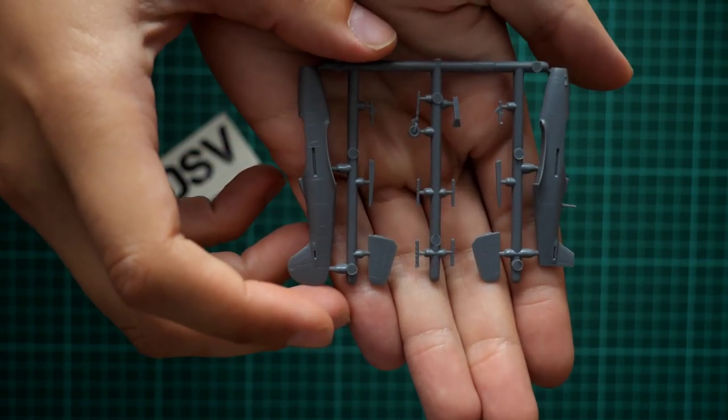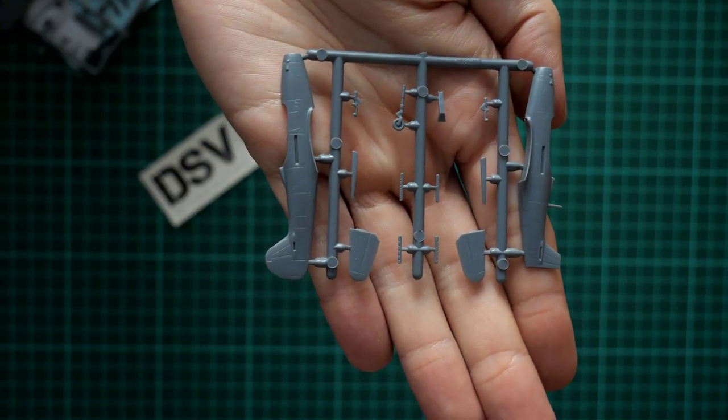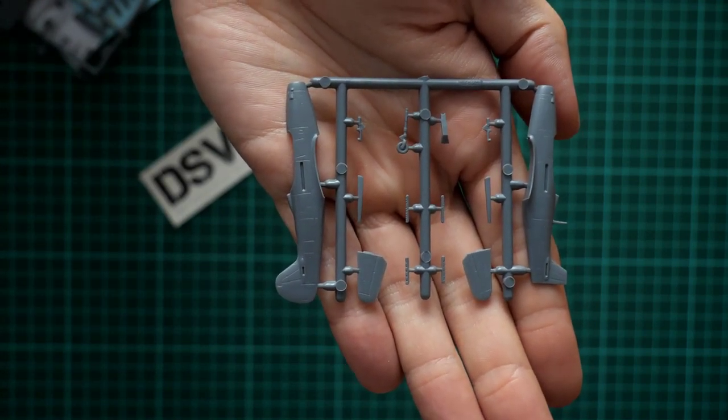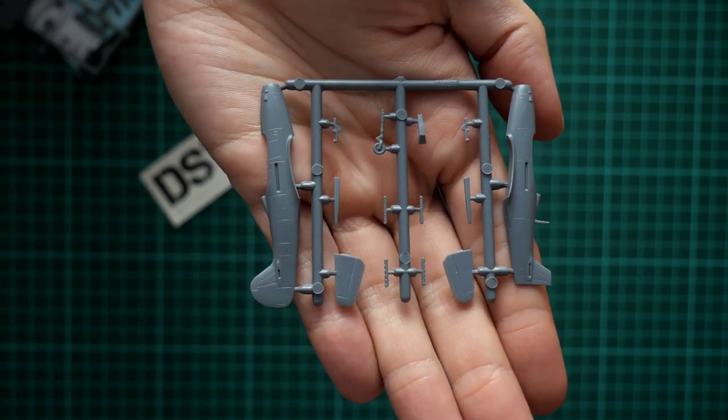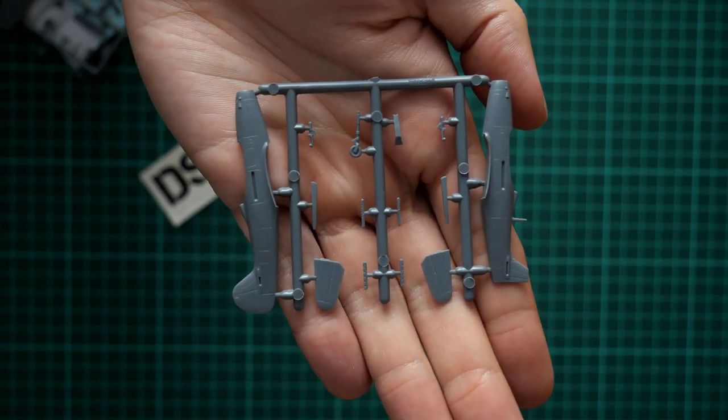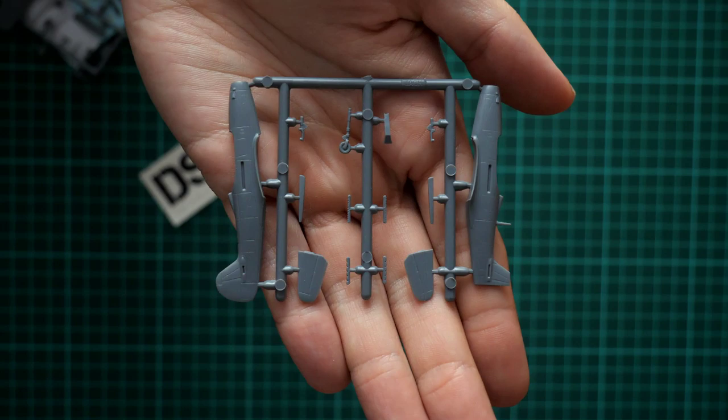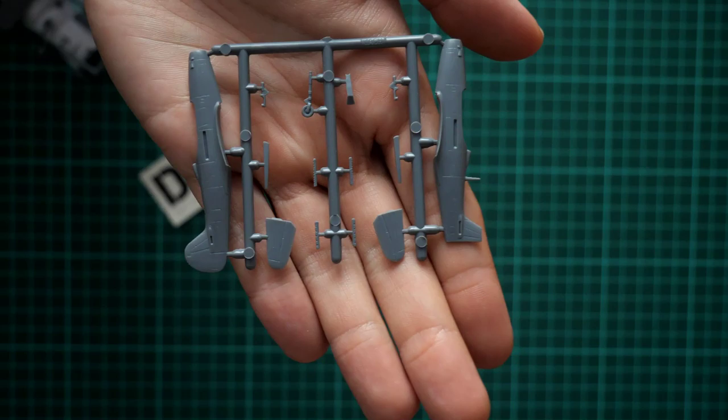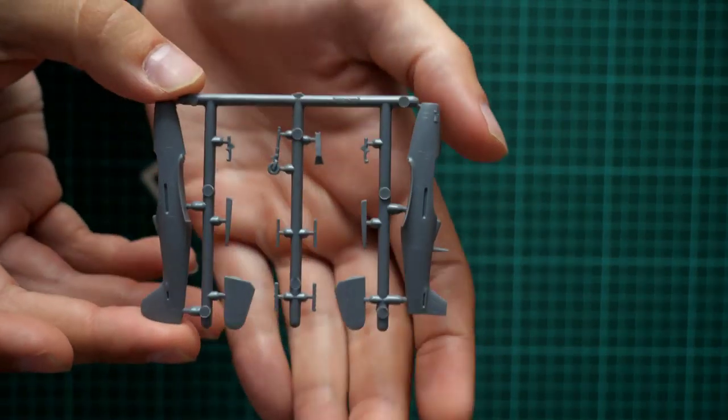So here we are. We have here two fuselage halves. We also have the tail wings and also some minor external elements. Molding quality looks really good, and external detailing, as far as you can see, we have recessed panel lines in place. I mean, you can't ask for more in such small size, so there is no surprise that we have only these features.